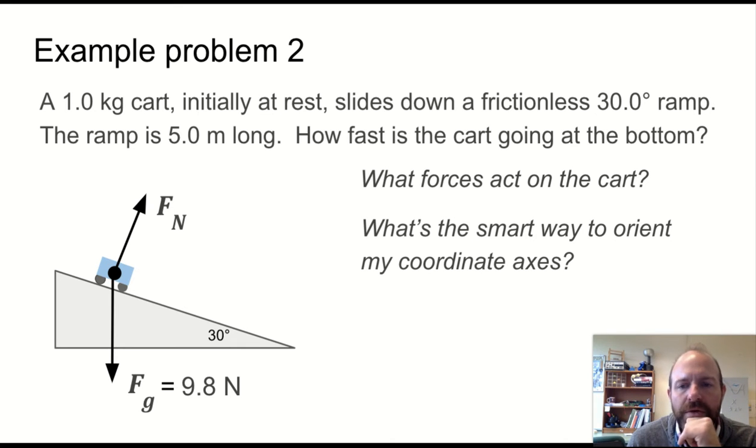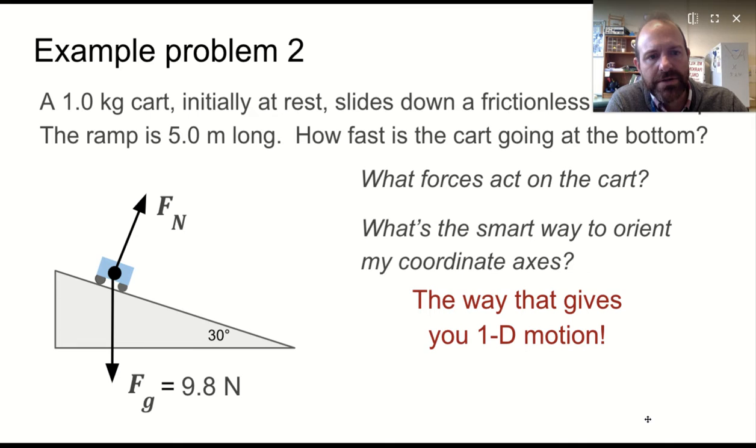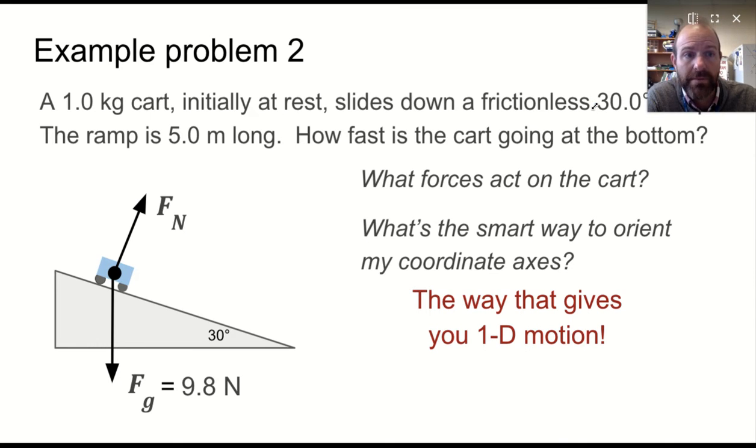So before we go any further and try to find the normal force, we want to ask ourselves, what is our coordinate system? Where is the origin? What's the positive x, the positive y? You could start with up is positive y, to the right is positive x. But if you do that, then the cart's motion is actually in two dimensions. It is moving both down and to the right. But what we can do is we can shift our coordinate system and do it so that we take our two-dimensional problem, and it actually becomes a one-dimensional problem, which simplifies things quite a bit.